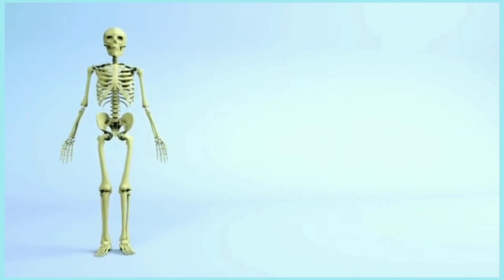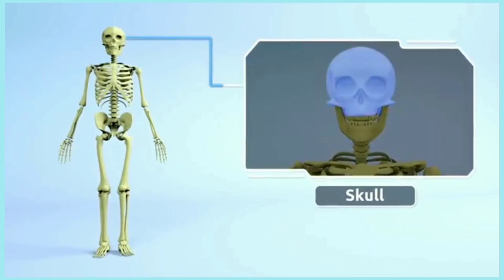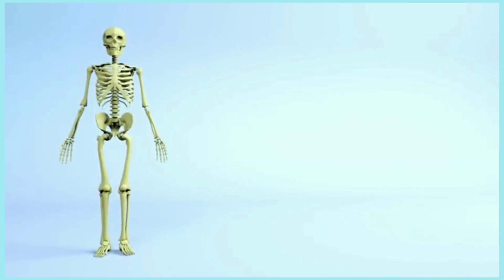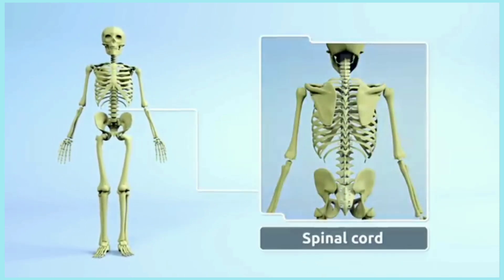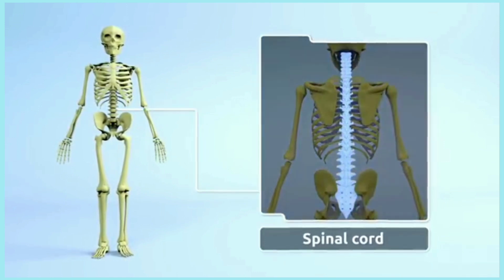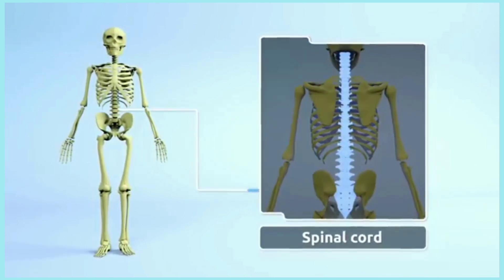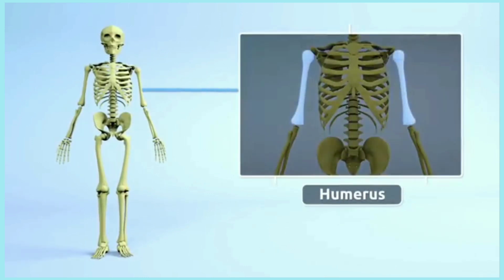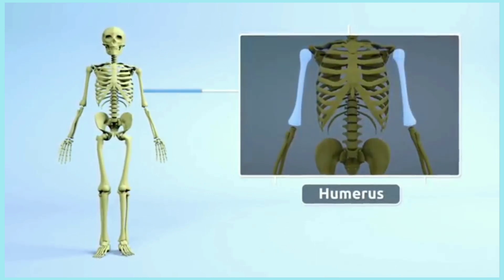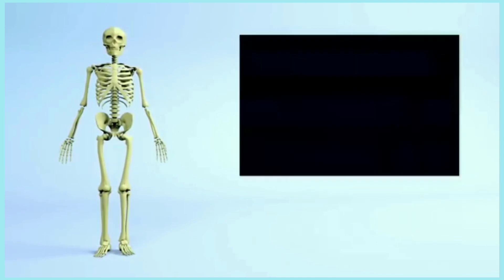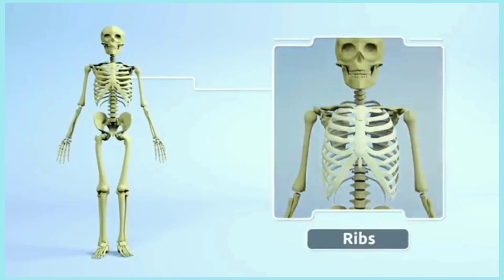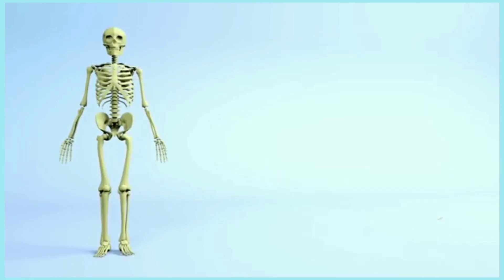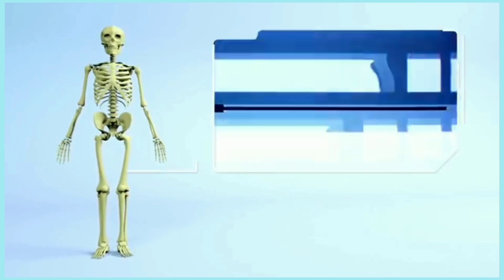We have more than 200 bones, like our skull, spinal cord, humerus, ribs, and femur bones.